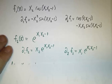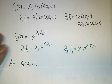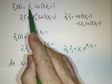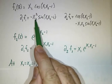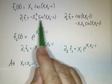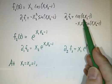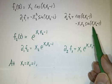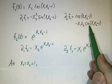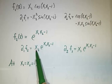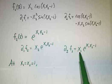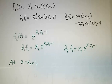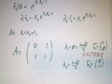Now we evaluate at x1 = x2 = 1. We get: −1²·sin(0) = 0; cos(0) − 1²·sin(0) = 1 − 0 = 1; 1·e^0 = 1; and 1·e^0 = 1. Putting it all together, our matrix A is [[0, 1], [1, 1]].